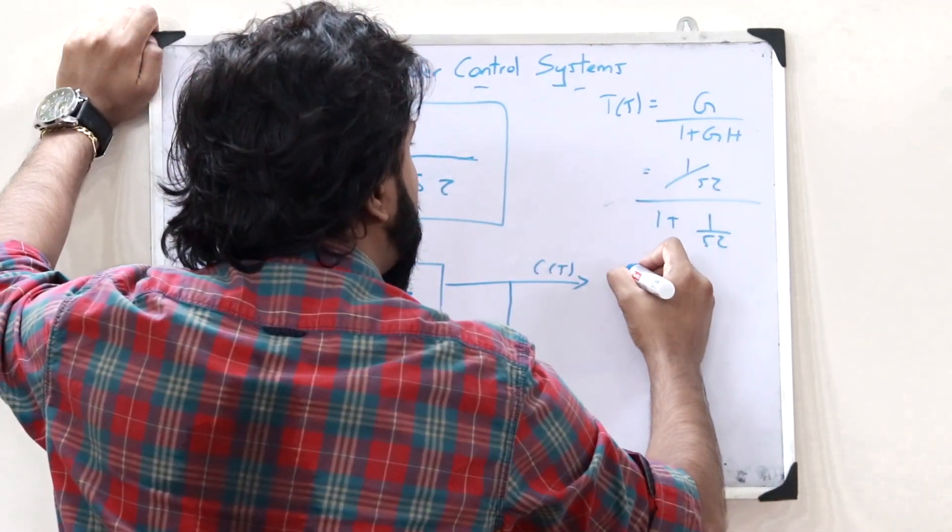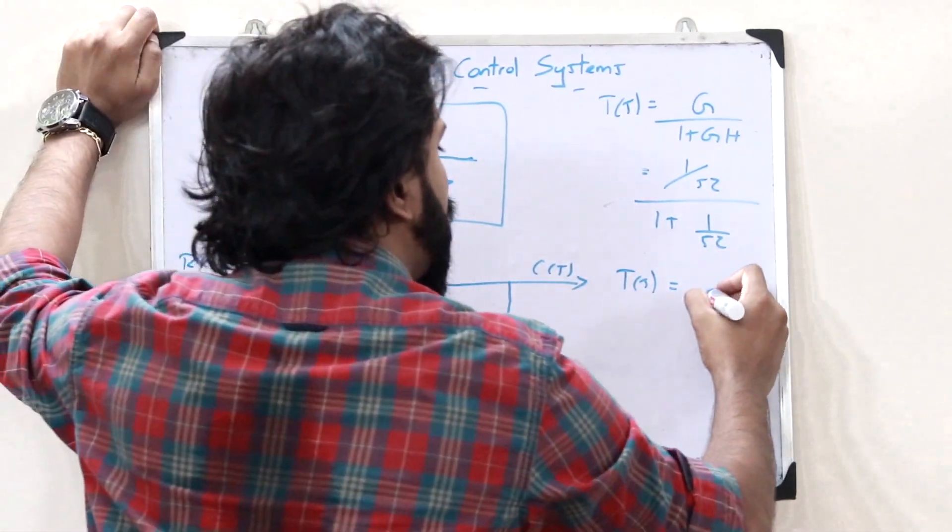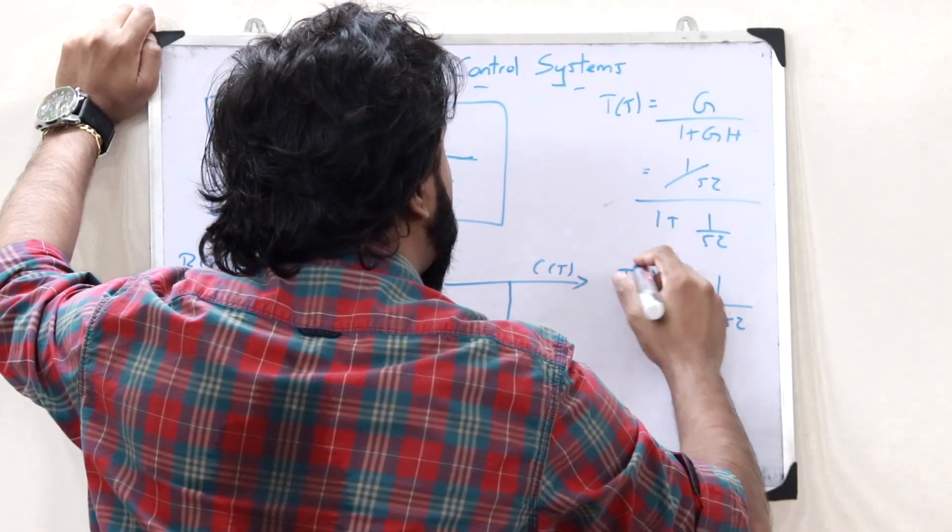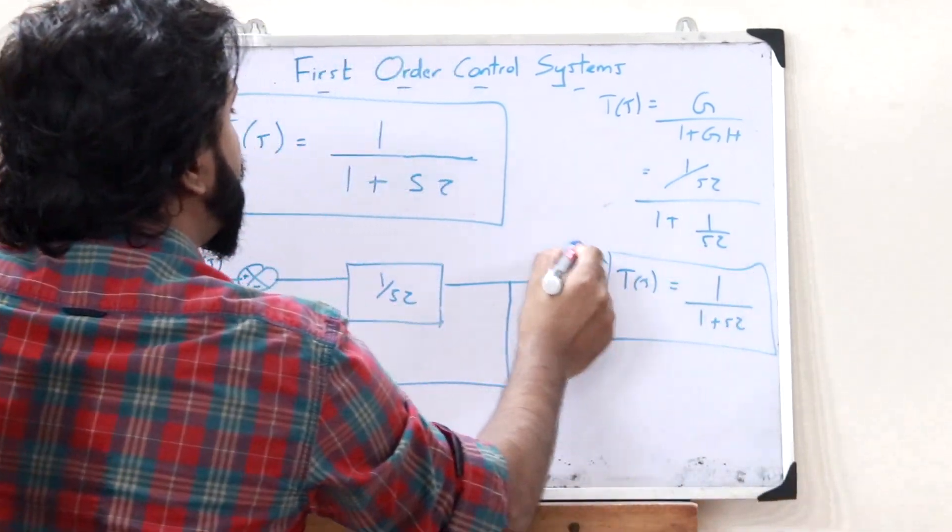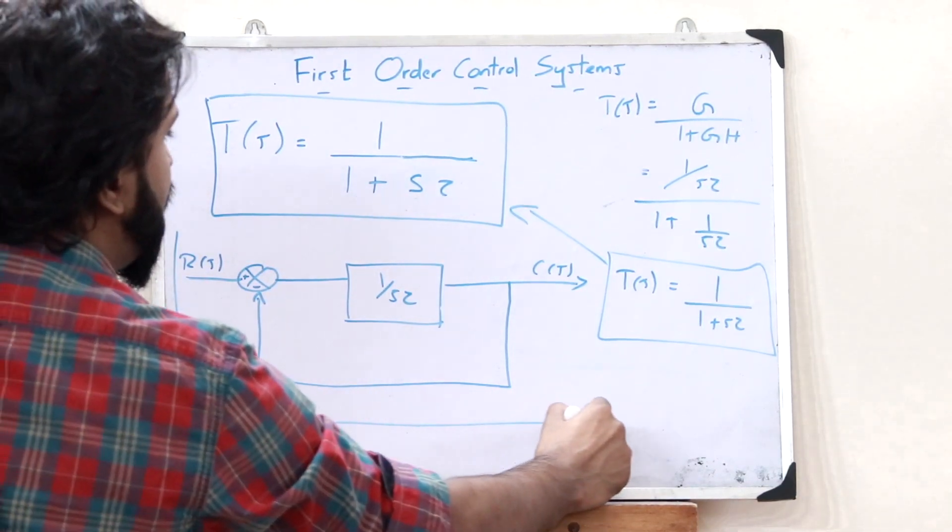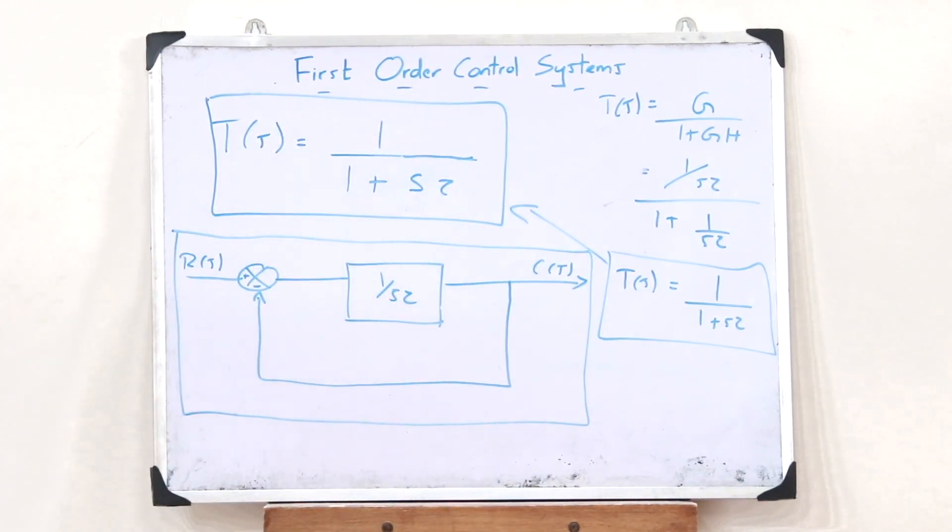Therefore, on simplifying this, we would get a transfer function T of S equals 1 divided by 1 plus S tau, which is the same as this. Therefore, this is how we generally represent a first order control system.